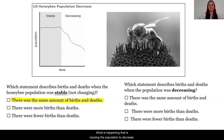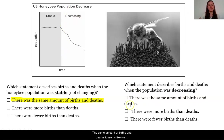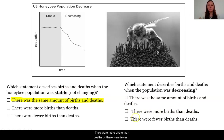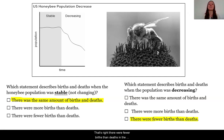So what is happening that is causing the population to decrease? The same amount of births and deaths — we could cross that one off, since that's what happens when it's stable. There were more births than deaths, or there were fewer births than deaths? That's right, there were fewer births than deaths in the population, meaning that there were more deaths than births.